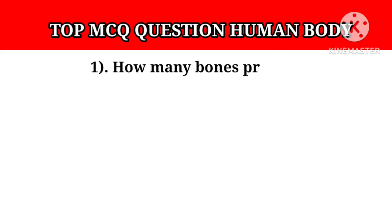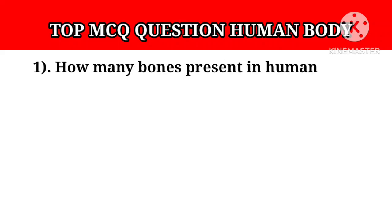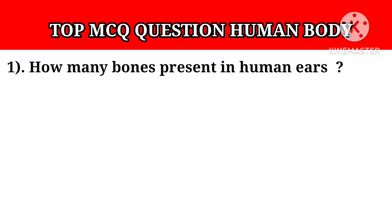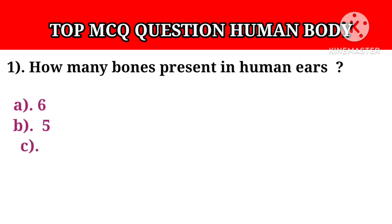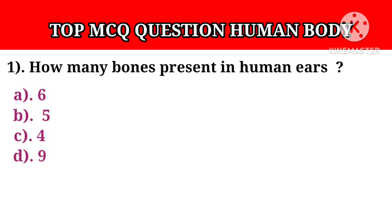Question number 1: How many bones are present in human ears? Option A: 6. Option B: 5. Option C: 4. Option D: 9. Answer A: 6.